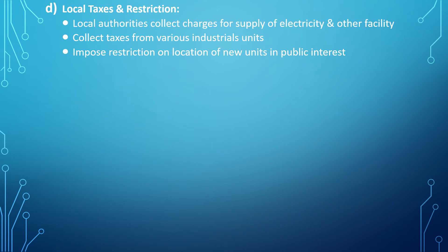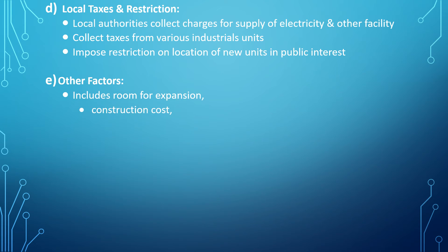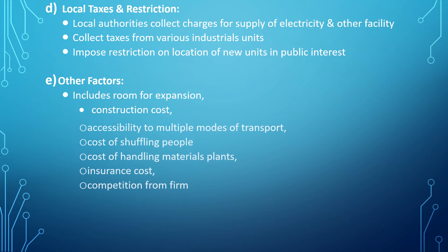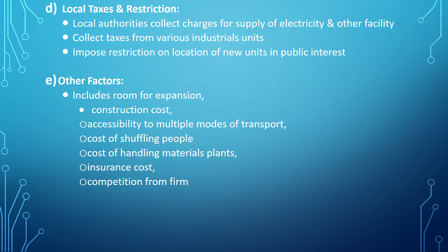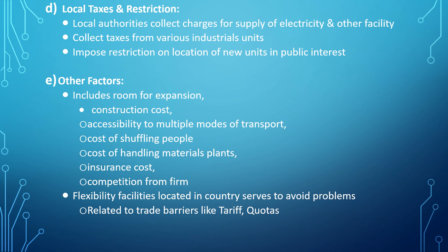Local taxes and restrictions: local authorities collect charges for electricity and other facilities, collect taxes from industrial units, and impose restrictions on the location of new units in the public interest. Other factors include room for expansion, construction cost, accessibility to multiple modes of transportation, cost of handling material, plant insurance cost, and competition from other firms. Locating facilities in certain countries helps avoid problems related to trade barriers like tariffs and quotas.